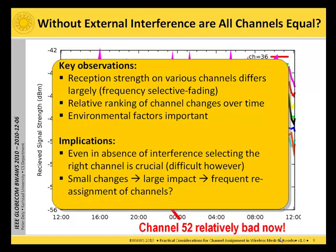The implications are that even in the absence of external interference, selecting the right channel is crucial but difficult. Also, small changes such as moving one of the transmitters by a few centimeters can have a large impact. So the question here is really: when doing channel assignment, do we have to perform frequent reassignment? As the environment changes frequently, that can have large implications.